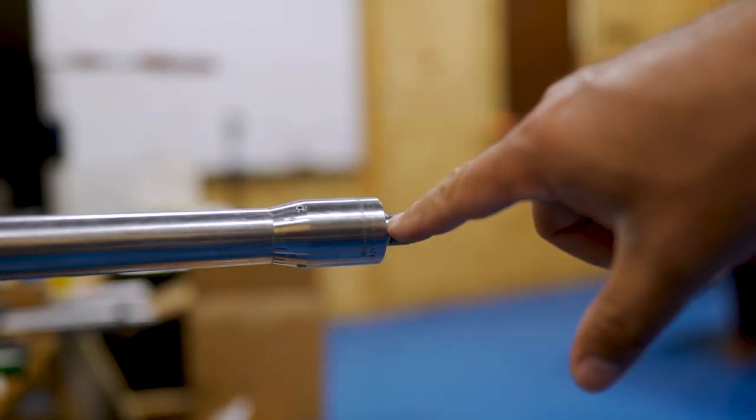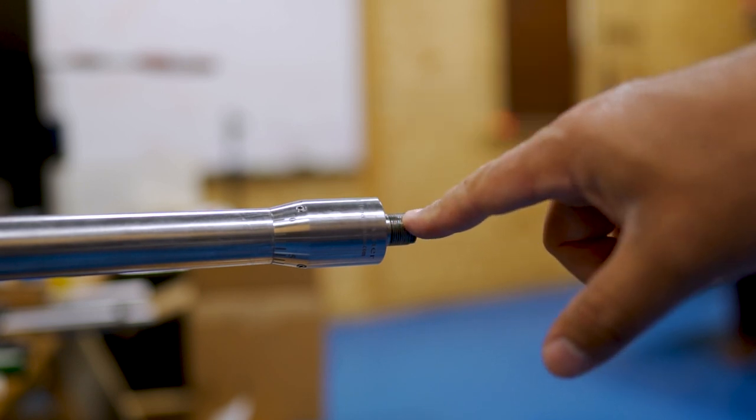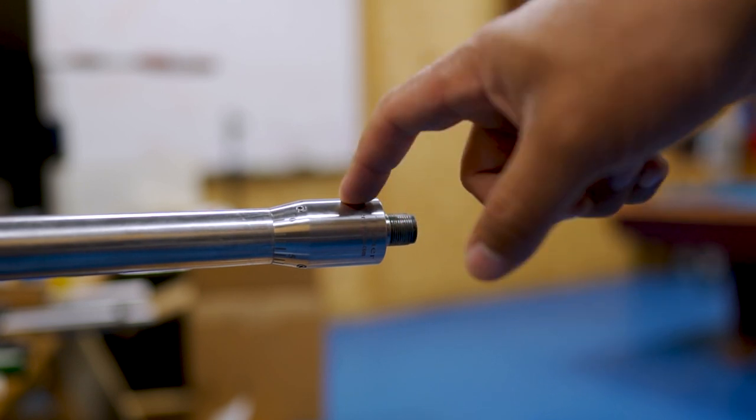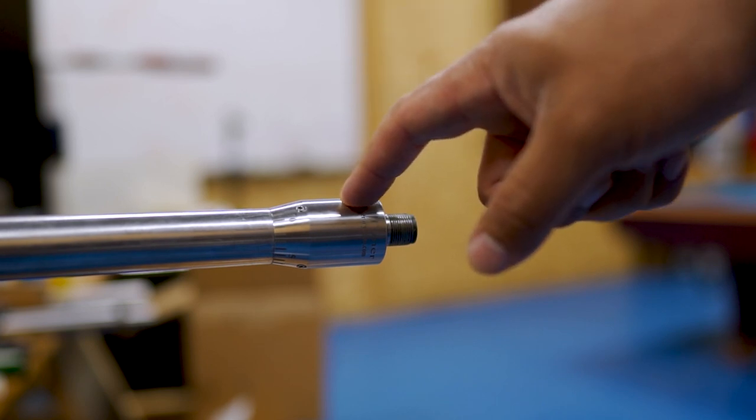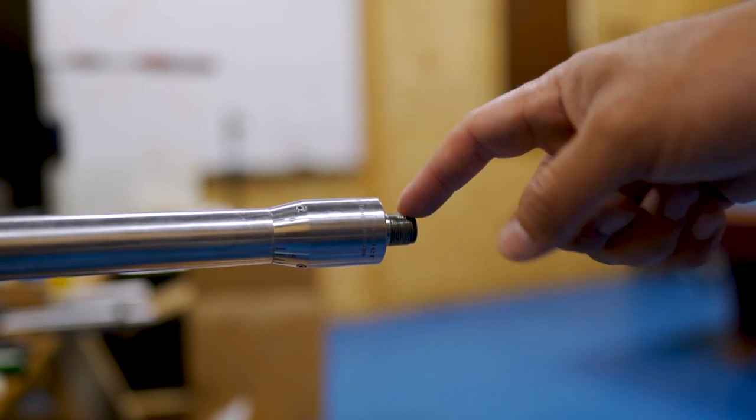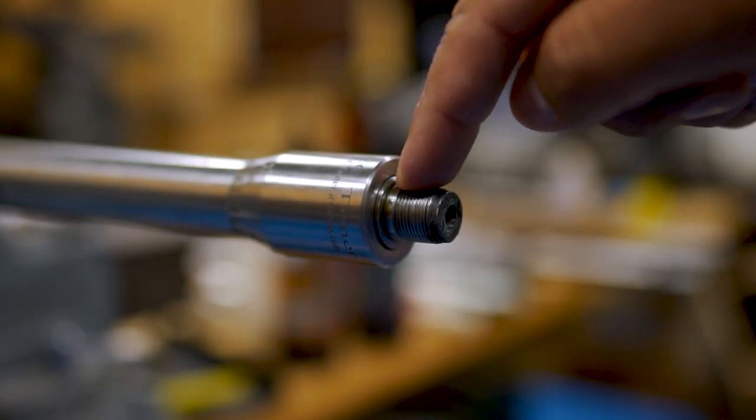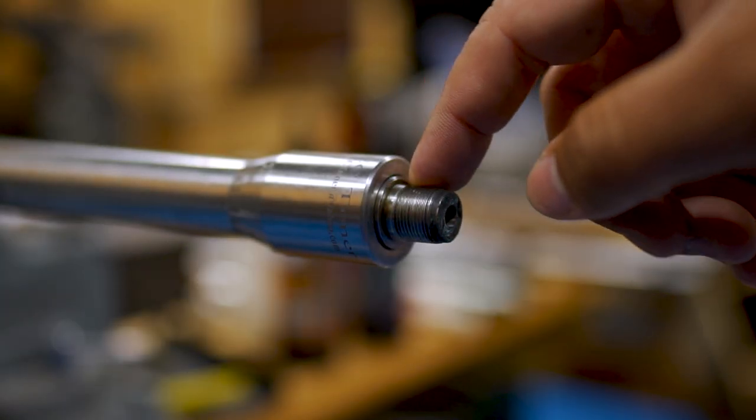As you can see, the threads for your muzzle device are still exposed. The ID of the Easy Tuner is 0.800 inches, and this is 0.625 inches, which is 5/8. So you still have a shoulder for your muzzle device to shoulder up against.